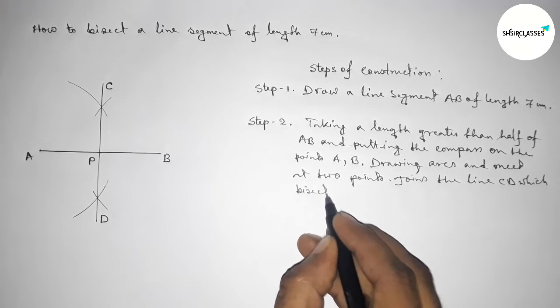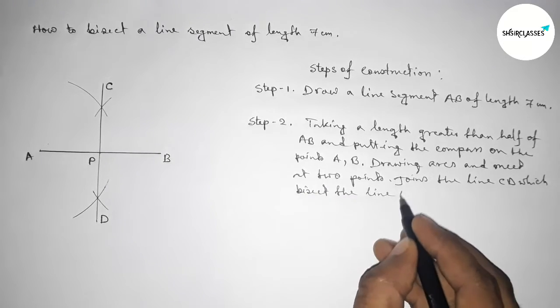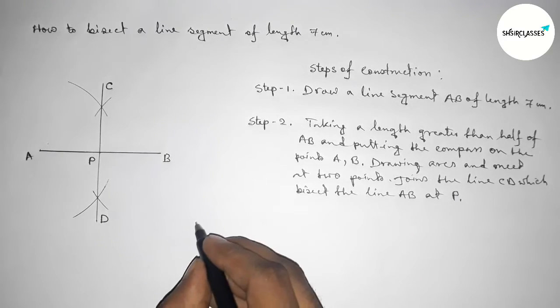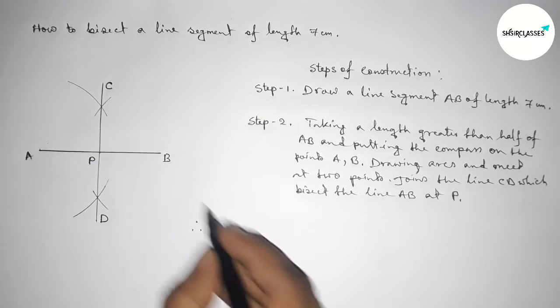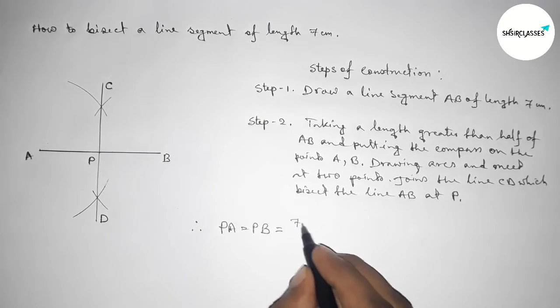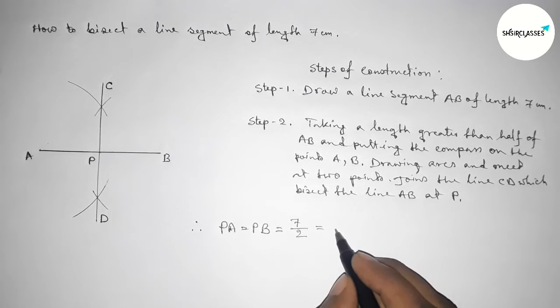Okay. Therefore, PA and PB are equal. So PA equals PB equals 7 by 2, so this is 3.5 centimeters.